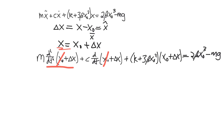The first term becomes m*(d²/dt²)*(delta X), and the second term becomes c*(d/dt)*(delta X). As is standard with differential equations, we want all state variable terms on one side and the forcing function on the other. So we pull all terms without delta X over to the right-hand side.